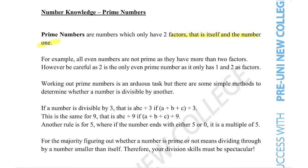For example, almost every even number cannot be a prime number because they can be divided by two as well as itself and one. But be careful—the only exception is the number two. It's the only even prime number as it only has itself and one as its factors.